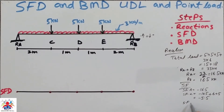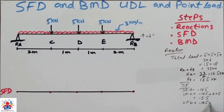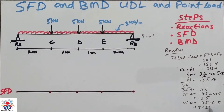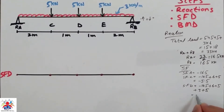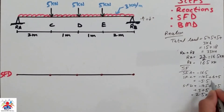Shear force at point D: minus 16.5 plus 6 plus 5 plus 3 plus 3 plus 5, which gives 2.5 kilonewton. Everything is in kilonewton.